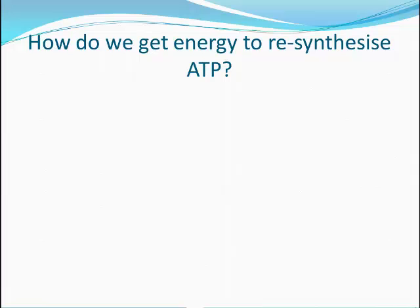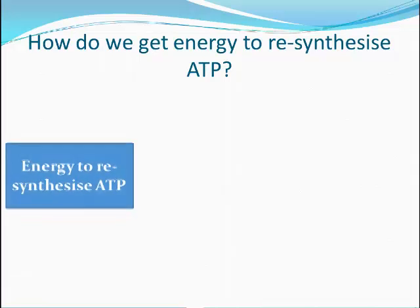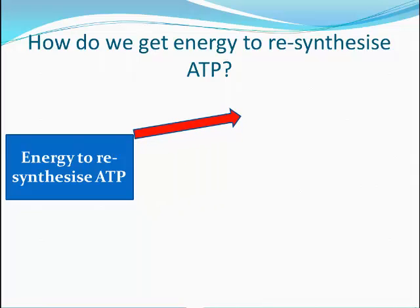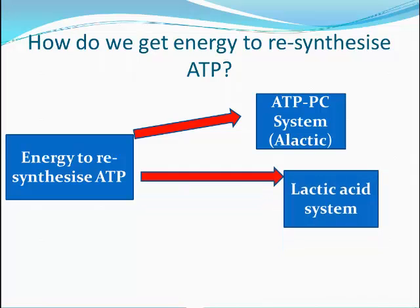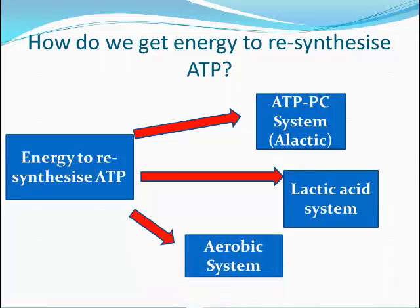How do we get energy to re-synthesise ATP? The body has three energy systems, which we briefly touched on at the start of the screencast. We have the ATP-PC system, the lactic acid system, and the aerobic energy system. These three energy systems supply the energy to assist with re-synthesising ATP from ADP, and we will be looking at these in detail in the weeks to come.